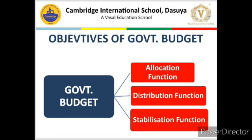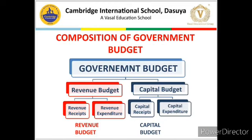So let us start today's topic. The composition of government budget — with any budget, whether it is a government budget or not, one part is receipts or incomes and the second part is expenditure. Similarly, government budget has revenue receipts or capital receipts, and as far as expenditure is concerned, revenue expenditure or capital expenditure. We have segregated them into a revenue part and a capital part, giving us revenue budget and capital budget.